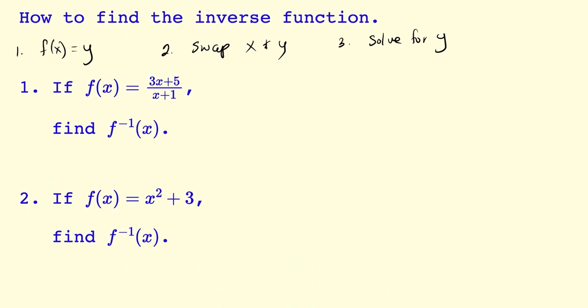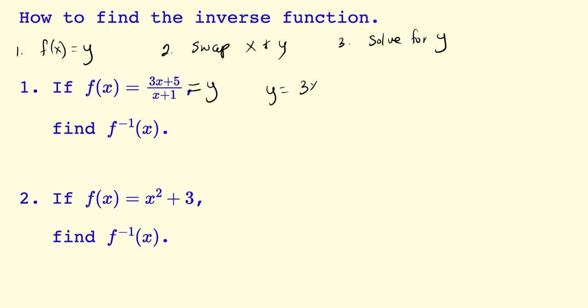Let's work on the first problem. f of x is equal to 3x plus 5 divided by x plus 1, and we want to find the inverse function of f of x. We're going to start with step one, which is we're going to set f of x equal to y. So we have y is equal to 3x plus 5 divided by x plus 1.